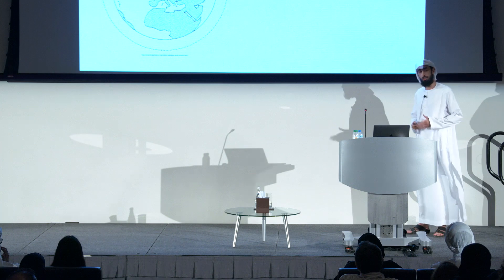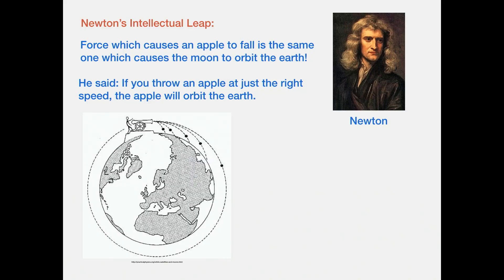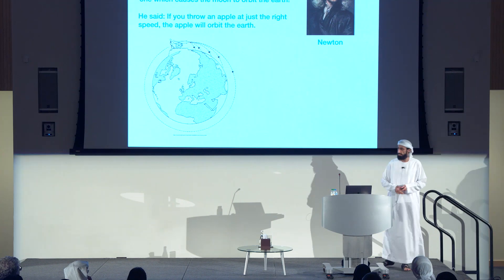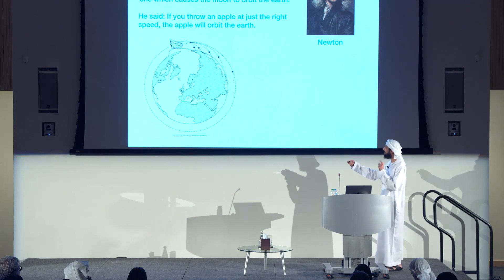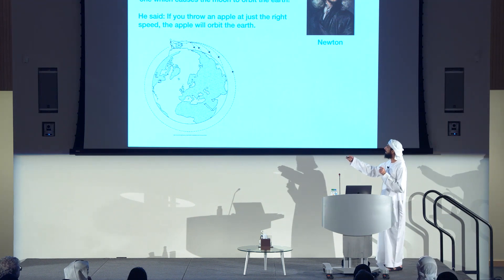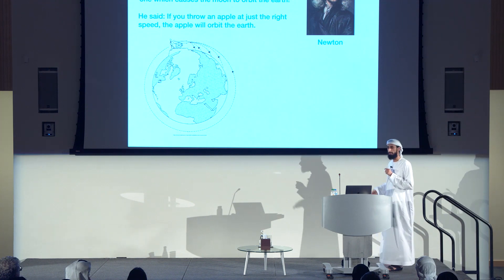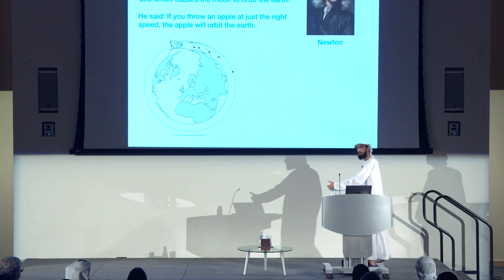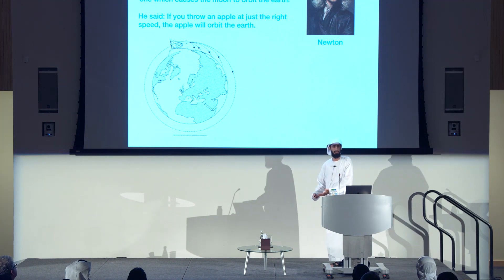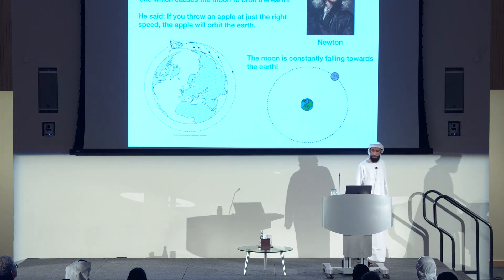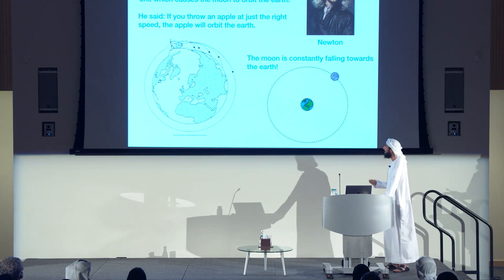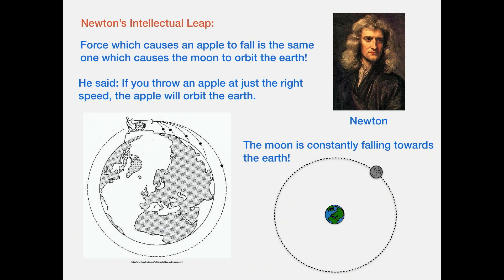Newton showed this by reasoning that if you throw an apple softly, it falls to the ground. But if you throw it really fast at just the right speed — this is a cannon — it will orbit the earth. It's sort of falling towards the earth but always missing the earth. And it's correct to say that the moon is constantly falling towards the earth — that's the same effect.